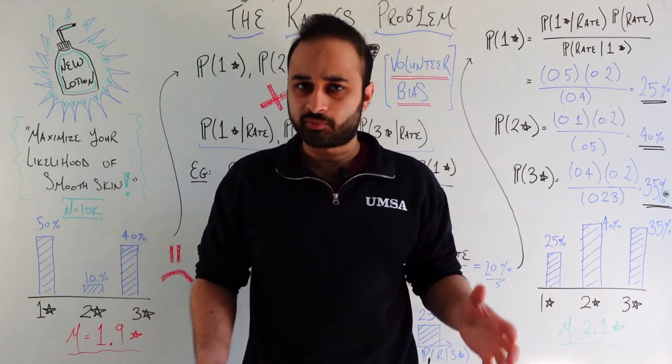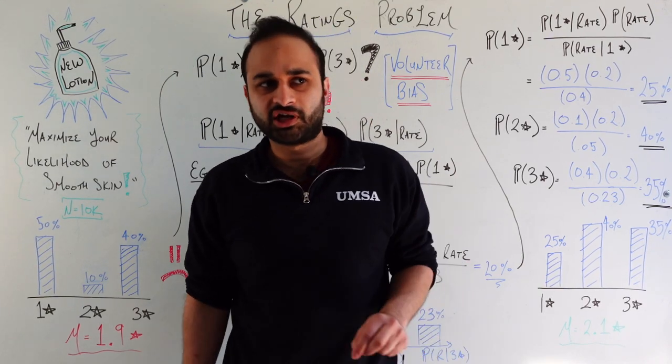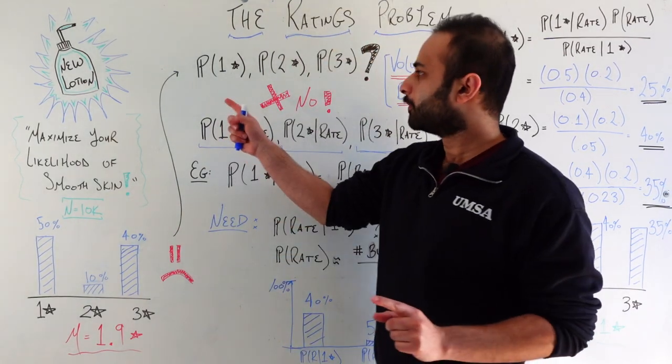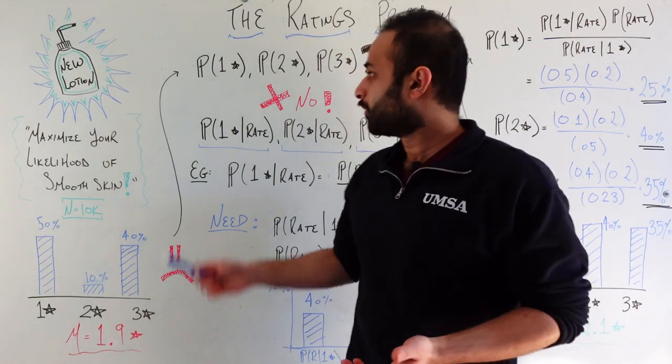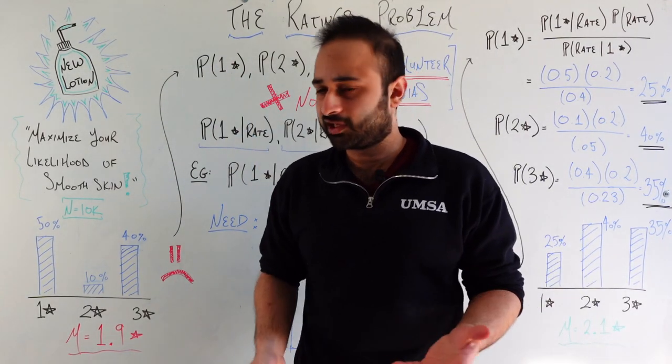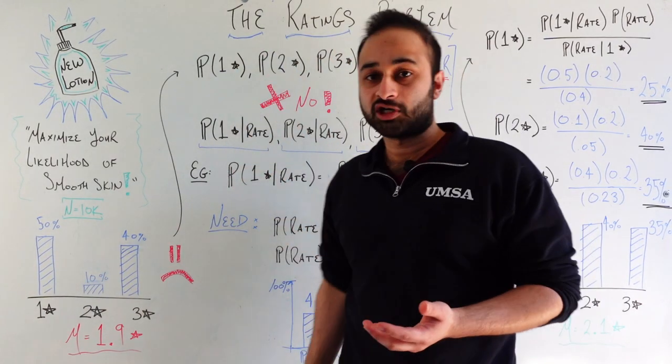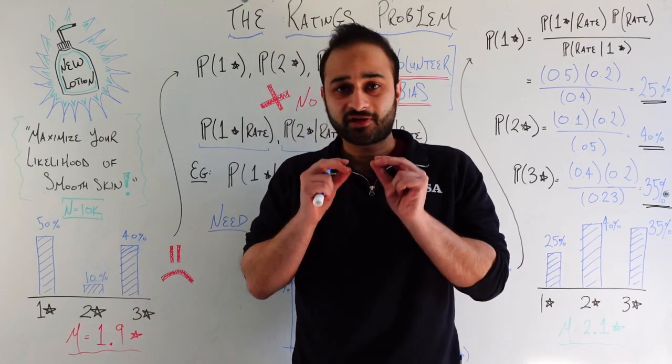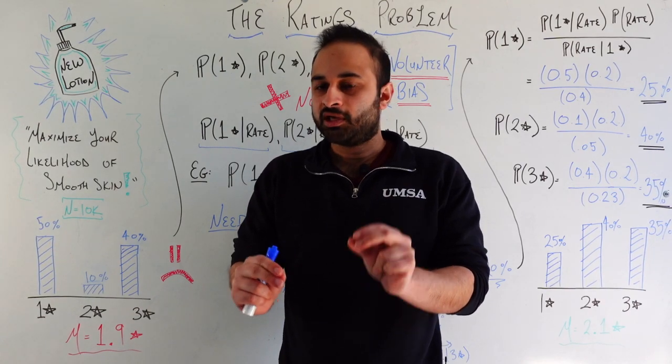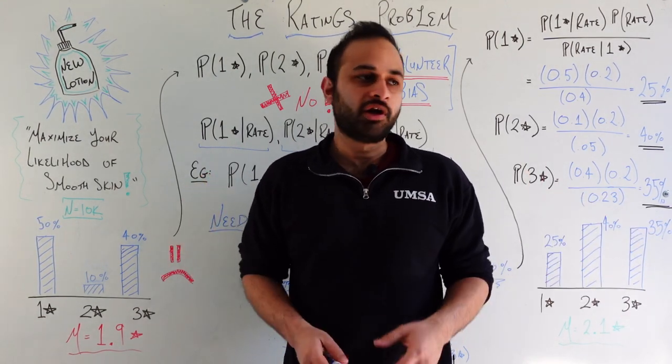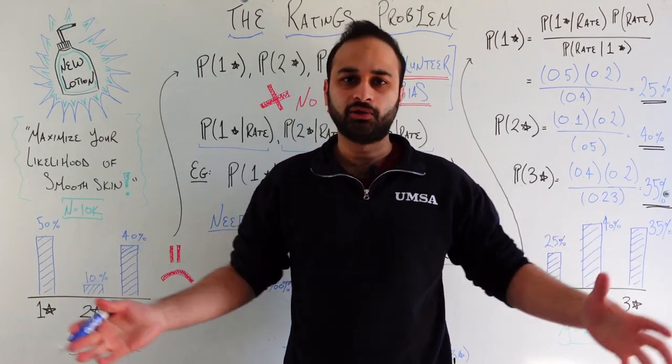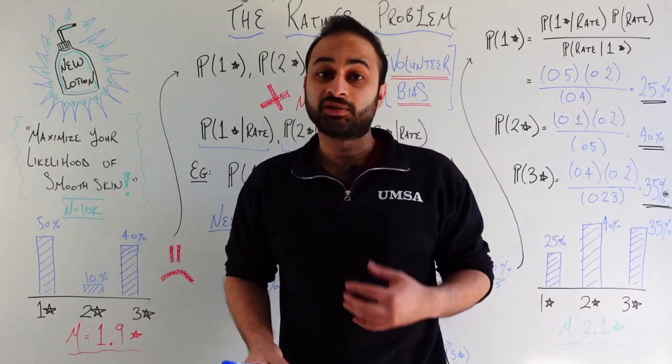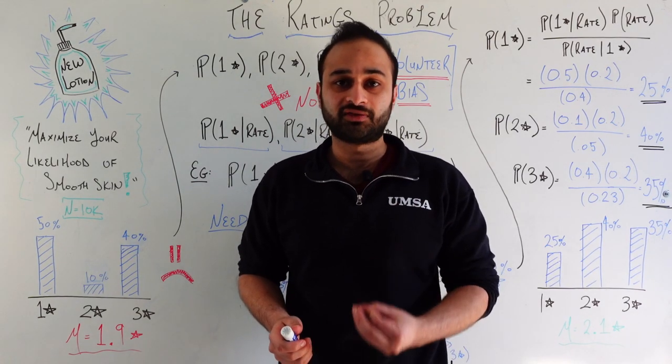So before we start redesigning our product or thinking about ways to make it better, let's first think about if these ratings that we're seeing are really an accurate picture of the true ratings of our product. What we think we're looking at currently is the probability that someone would rate it as one star, which we think is 50%, the probability someone would rate it as two stars, which we think is 10%, and the probability someone would rate it as three stars, which we think is 40%. But that's not the actual probabilities we're looking at. In order to get a big enough sample size, like 10,000, typically this rating has to be voluntary, which means that someone has to deliberately want to rate this product.